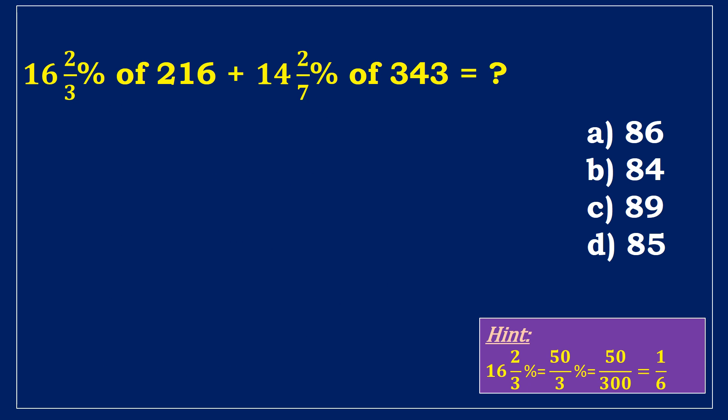The first example is simplifying 16.2 by 3% of 216 plus 14.2 by 7% of 343. The fraction of 16.2 by 3 percent is 50 by 3 percent, or 1 by 6. We can say that 14.2 by 7% is 1 by 7. 1 by 6 into 216 and 1 by 7 into 343 becomes 36 and 49 respectively. The sum of these values is the final result, which is 85.